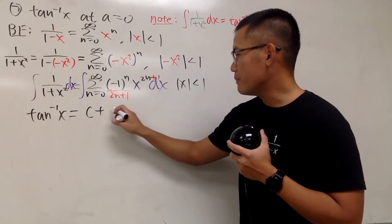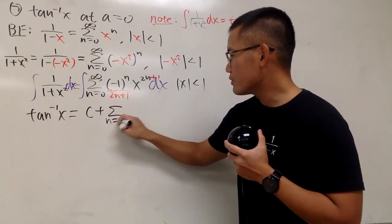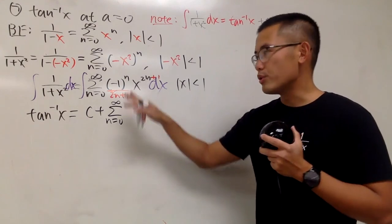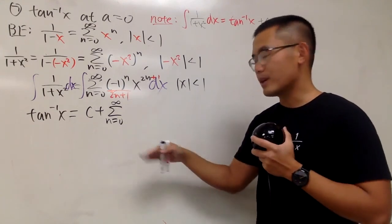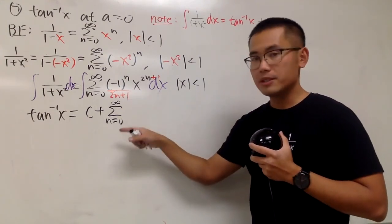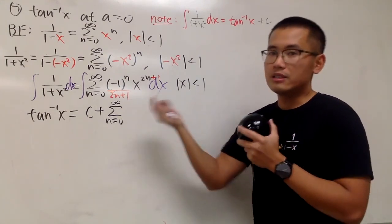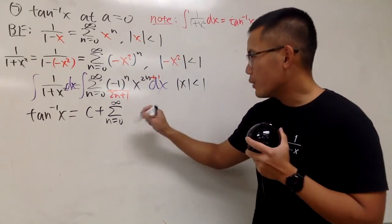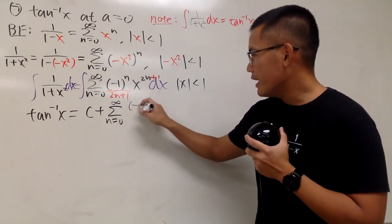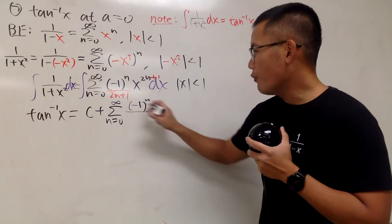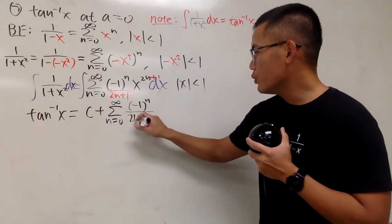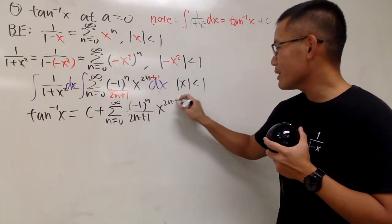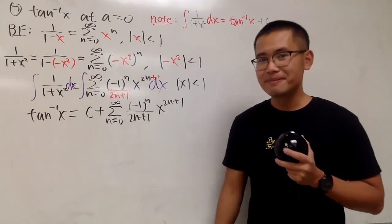So here we have the sum as n goes from 0 to infinity. When you integrate, you don't lose any term. When you differentiate, sometimes you want to start with n equal to 1. Here we have negative 1 to the nth power over 2n plus 1, times x to the 2n plus 1 power.